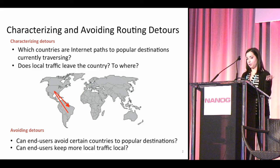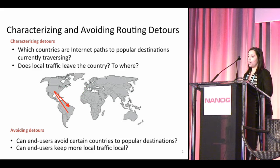The other way to get country avoidance is by accessing a replica of the content located in another country where the path does not contain Mexico. Looking at this, we can study how avoidable different countries are. We also want to answer whether end users can keep more local traffic local. We often see paths that start and end in the same country but actually traverse a foreign country — we call these tromboning paths.